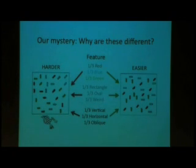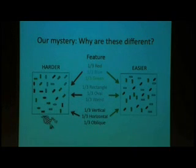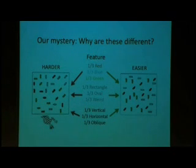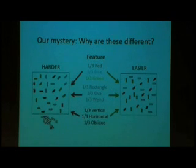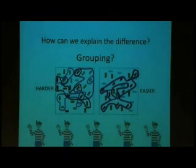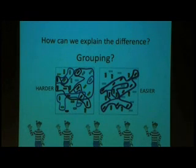If you look at the displays, do you have any ideas of what can cause this difference? In the easier one we have really nice groups — all the blue things are rectangles and horizontal, all the green things have a different shape and are vertical — and in the harder one this is kind of a mess. So most people, when asked why the easier one is easy, say 'look, we can see nice groups.' One explanation is grouping: in the easier one you have groups, and in the harder one there is no logical relation among the distractors.